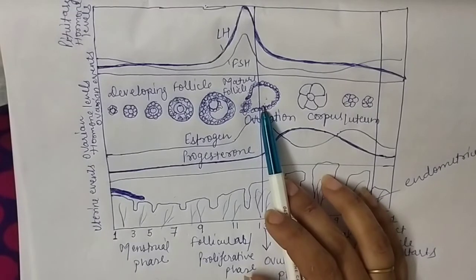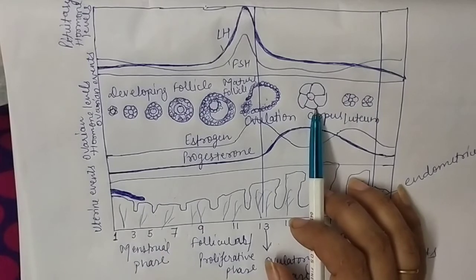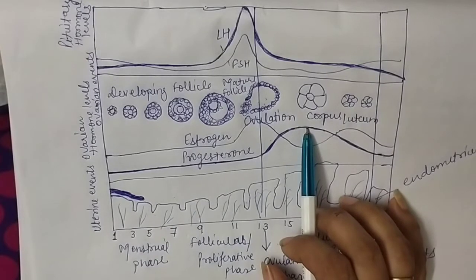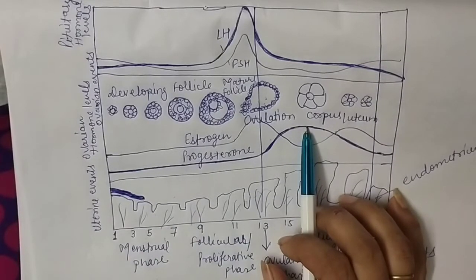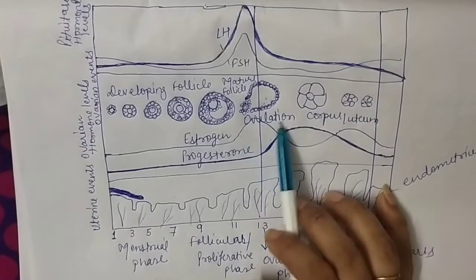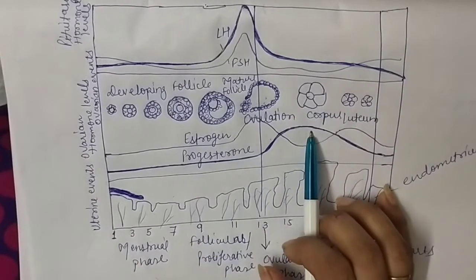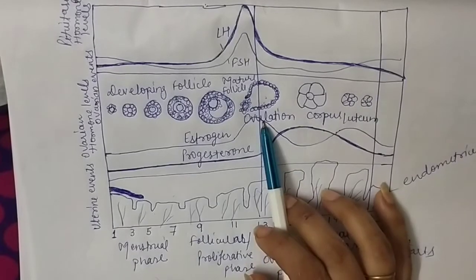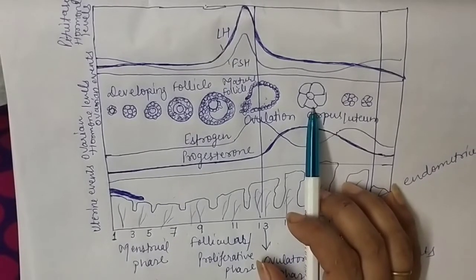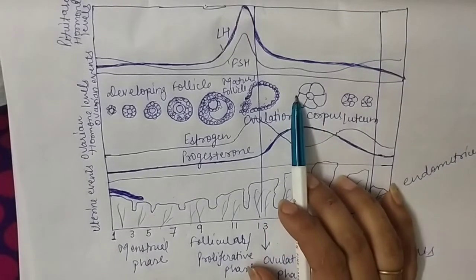After the ova is released, the remaining Graafian follicle changes into another structure called corpus luteum. This corpus luteum increases the level of progesterone hormone, which is known as the pregnancy hormone. In case the ova gets fertilized by sperm, the corpus luteum continues producing progesterone, fusion occurs, zygote forms, implantation happens, and progesterone hormone maintains the pregnancy.